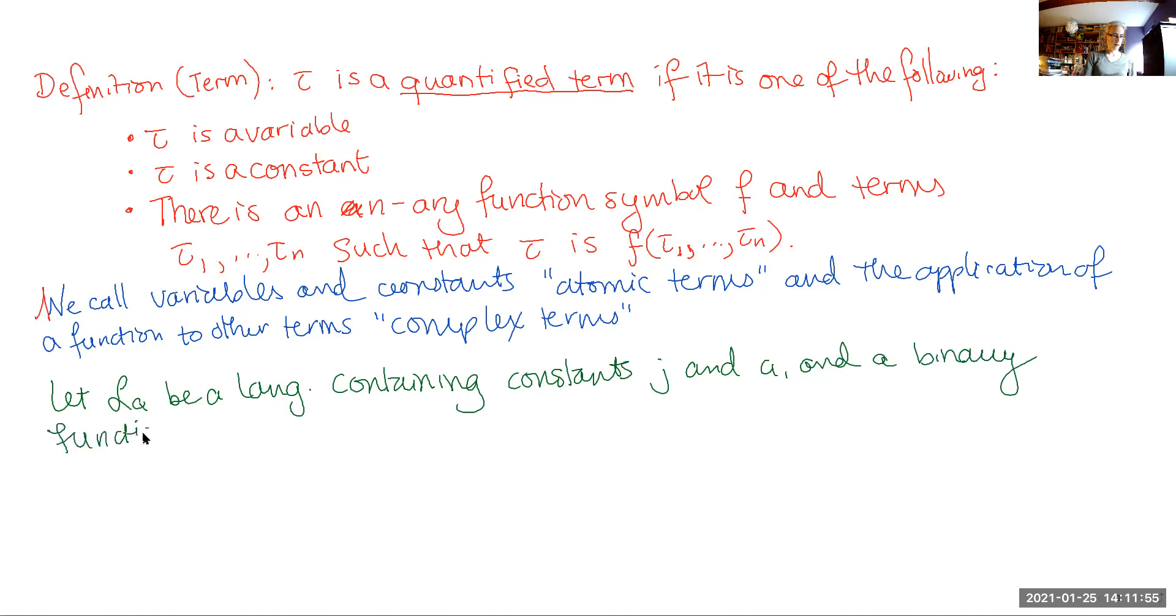So let's let LQ be a quantified language containing constants J and A and a binary function F. Then J and A are atomic terms in LQ and something like F(J,A) is a complex term. It's a complex term that has two atomic terms as input, but now that we have a complex term, we could use it as the input to the function again. So we could also have, for instance, F(F(J,A),A) is also a complex term in this language, according to the definition of term that we have just given.